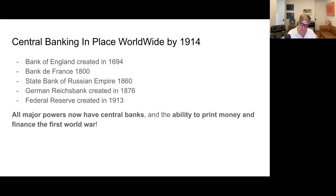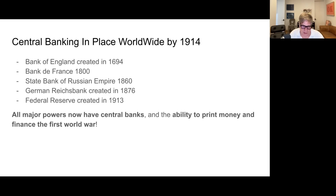Our story starts in 1914, the beginning of World War I. By this time, central banking is in place worldwide. It started with the Bank of England in 1694, then Napoleon started the Bank of France in 1800. The Russian Bank was started in 1860, and 16 years later we have the German Reichsbank, and finally the Federal Reserve in 1913. The stage is now set — all the major powers have central banks and the ability to print money.